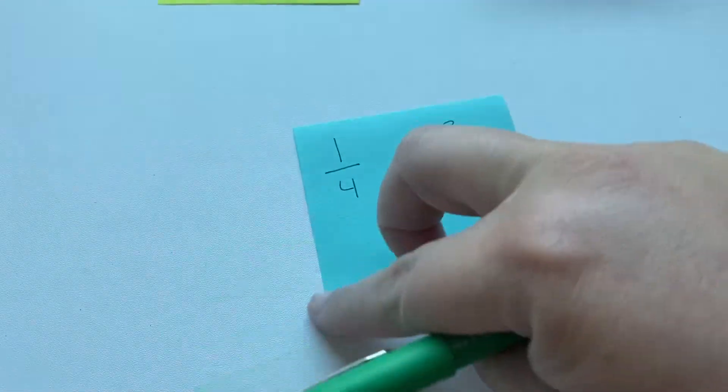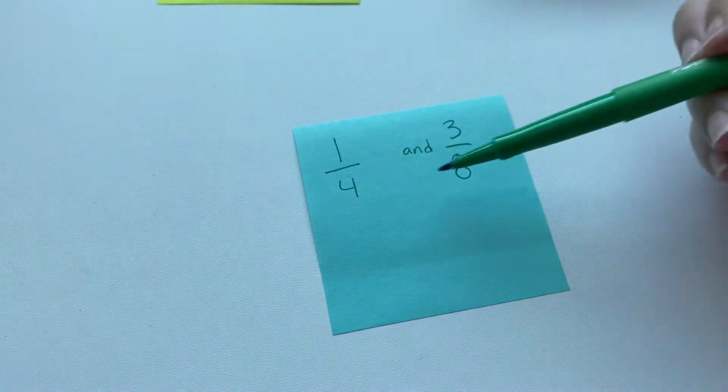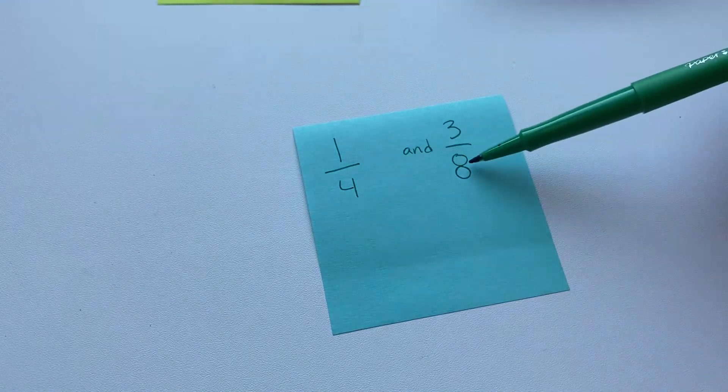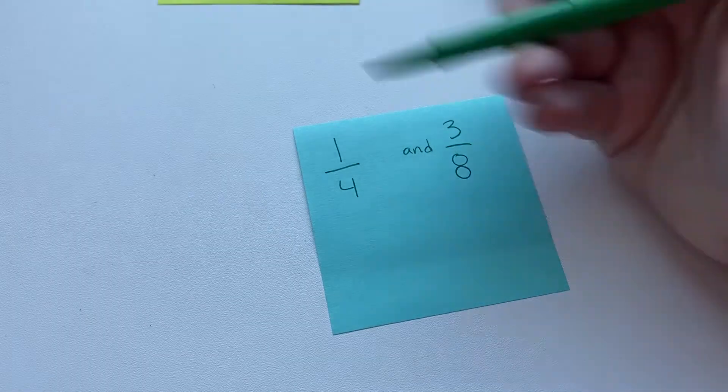So the first thing to do, because if it's there, it's really easy, is to check to see if the smaller denominator goes into the larger one. So this one does. So four goes into eight two times.